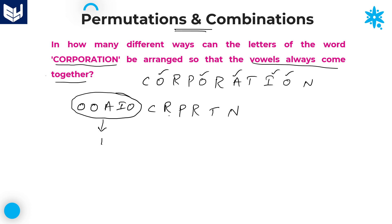Now, if you observe carefully, there are 6 remaining letters plus 1 single entity, giving 7 total. These 7 letters can be arranged in 7 factorial ways. But the letter R is repeated twice, so you need to divide this 7 factorial by 2 factorial.